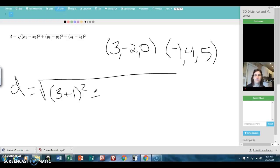Then I do the same thing with the y's, negative 2 minus 4, square that. And then I do the same thing with the z's, 0 minus 5, square that.